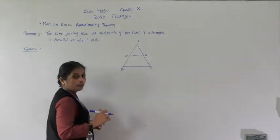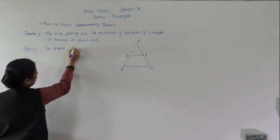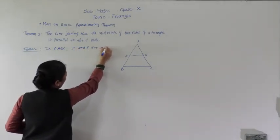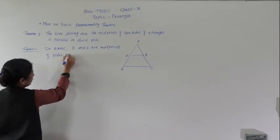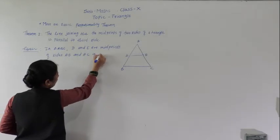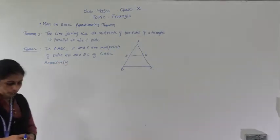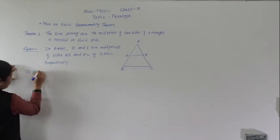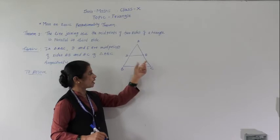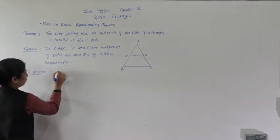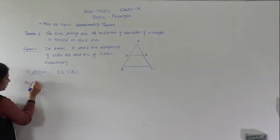According to the statement, D and E are the midpoints of sides AB and AC respectively. We have to prove that DE is parallel to BC. Given: in triangle ABC, D and E are midpoints of sides AB and AC. To prove: DE is parallel to BC. Now we will start the proof.